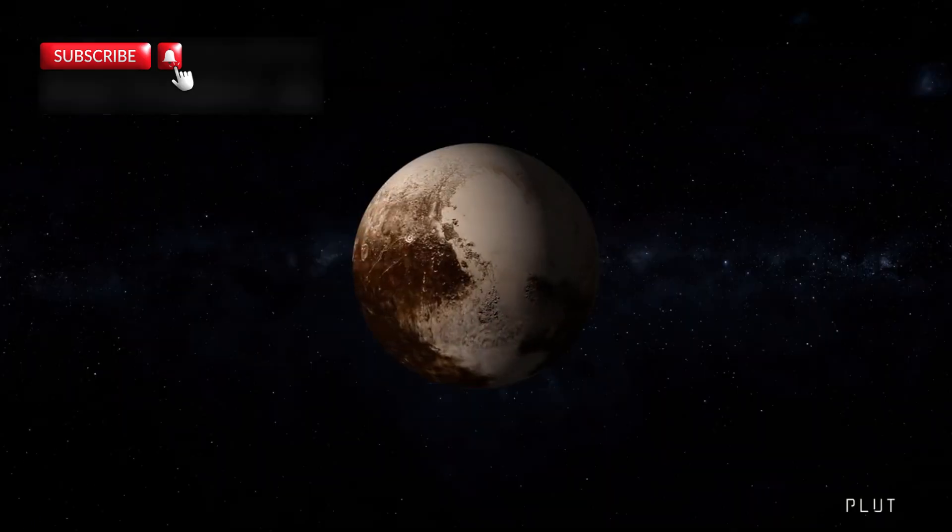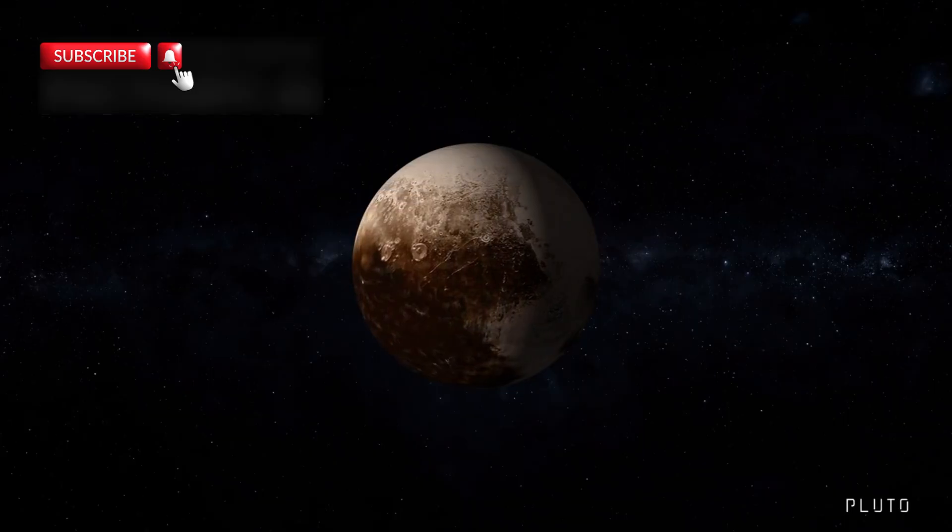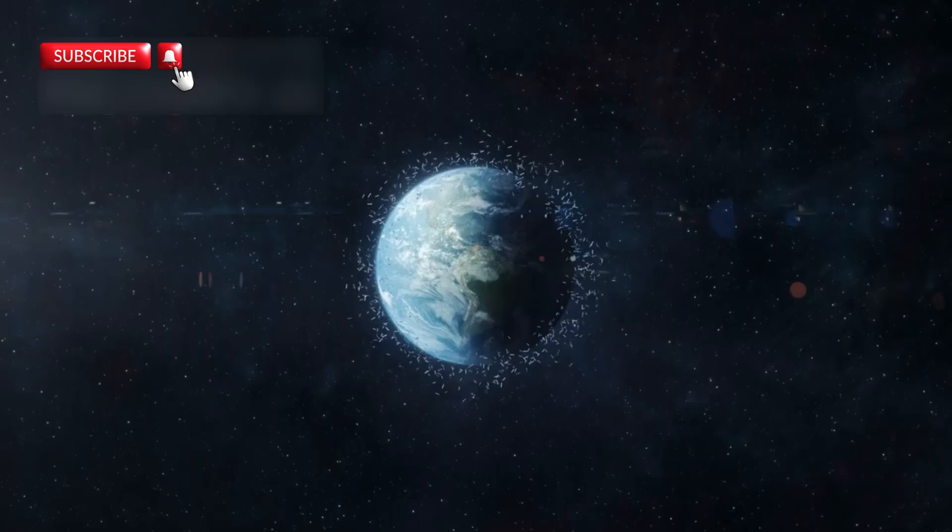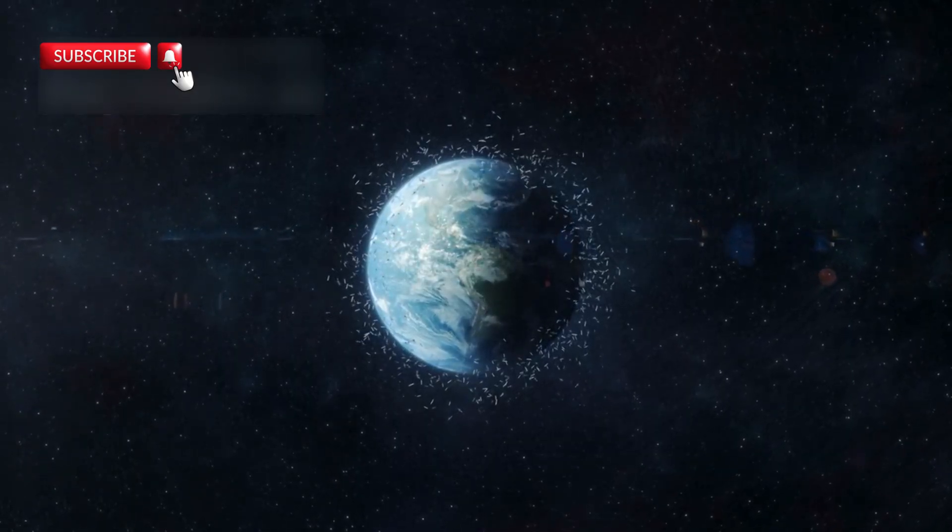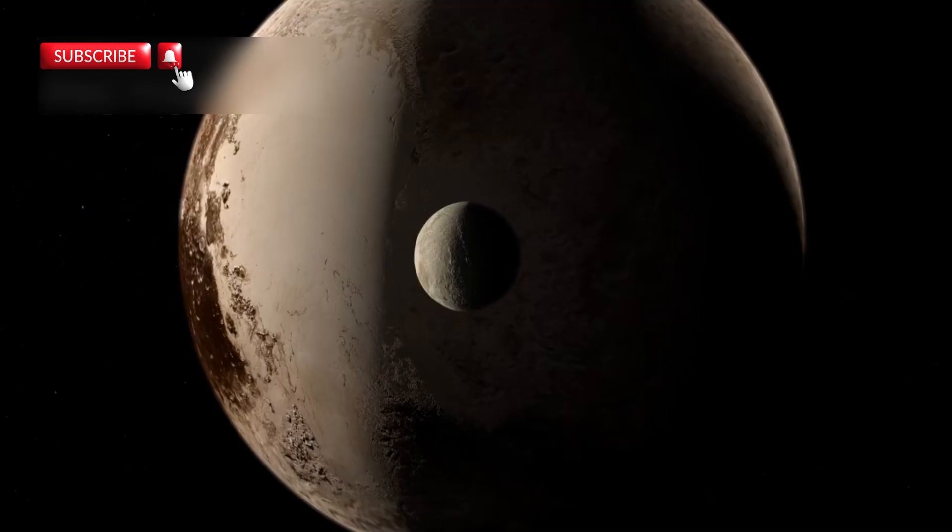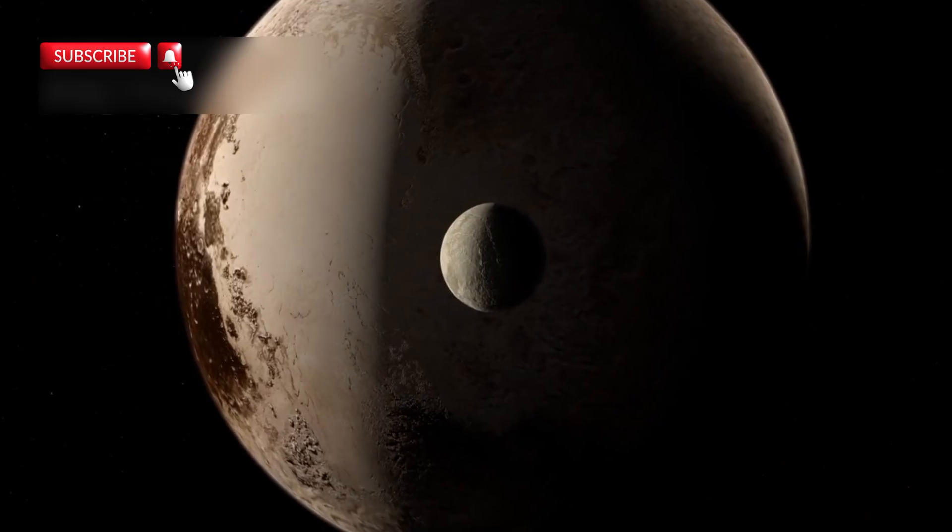In 2006, the International Astronomical Union, IAU, made a decision that changed everything. That year, Pluto was reclassified as a dwarf planet. This new category was made for objects that orbit the Sun and are round but haven't cleared their orbital path of other debris. Pluto failed to meet the third requirement.